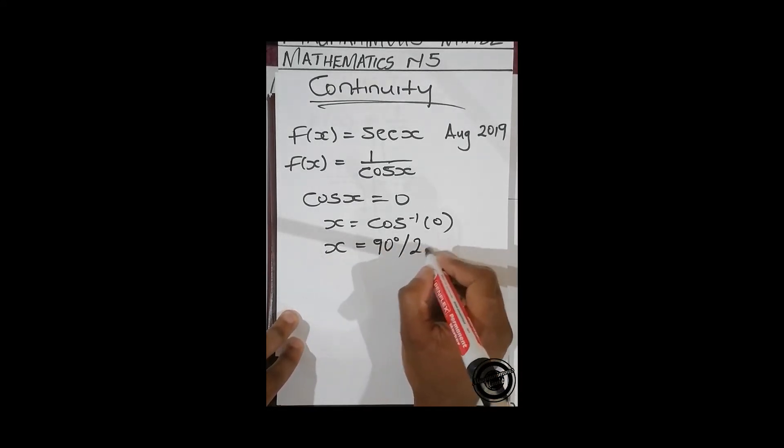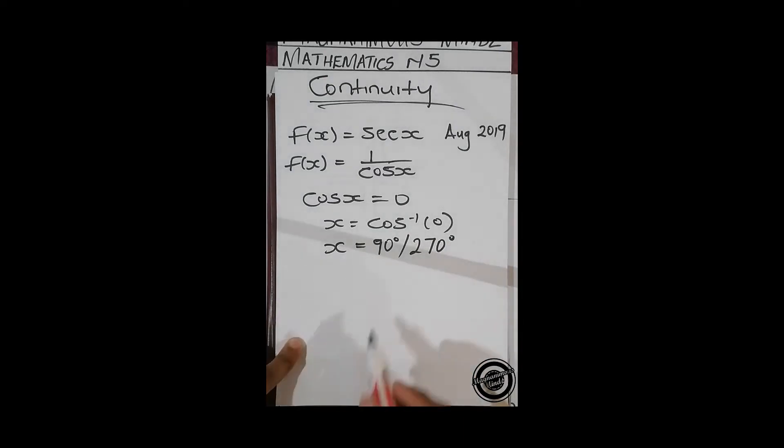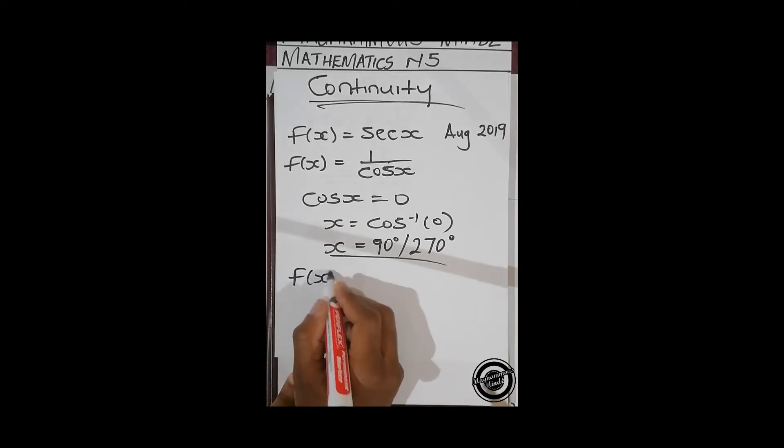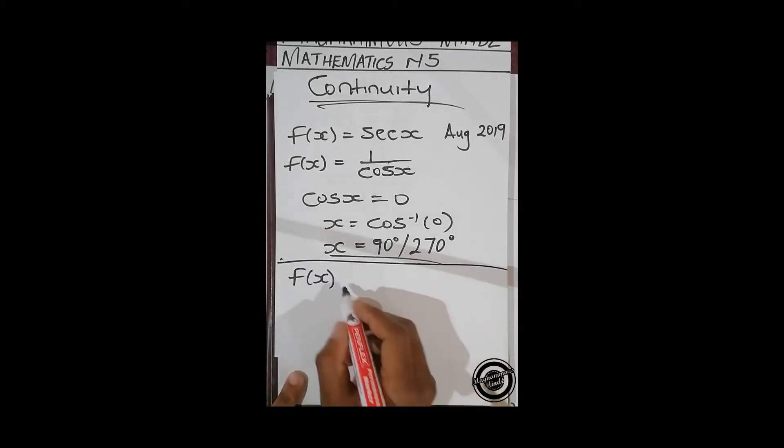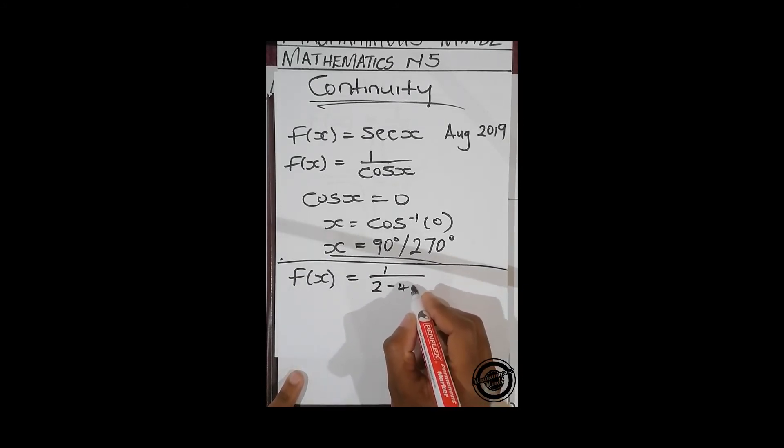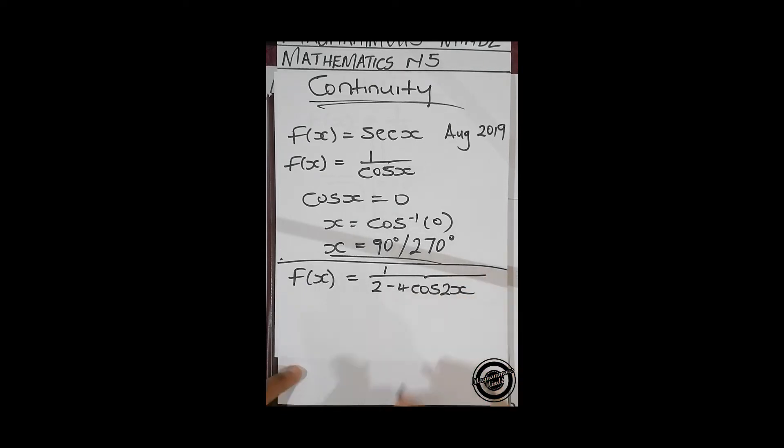And then another question is whereby you are given f(x) equals to one over two minus four cos 2x. Then again you start by looking at the main function. The main function is cos x, or in this case it's cos 2x.